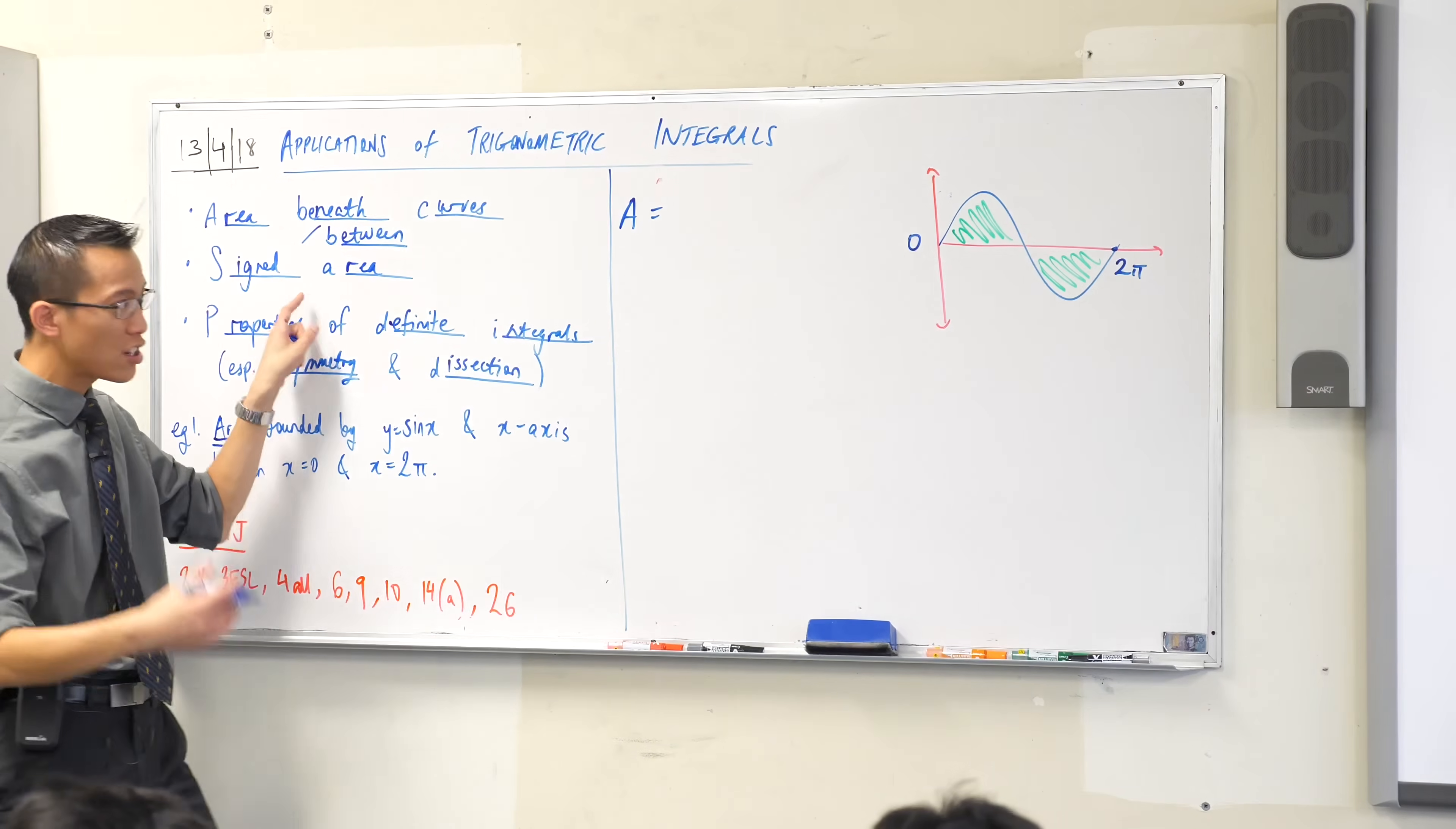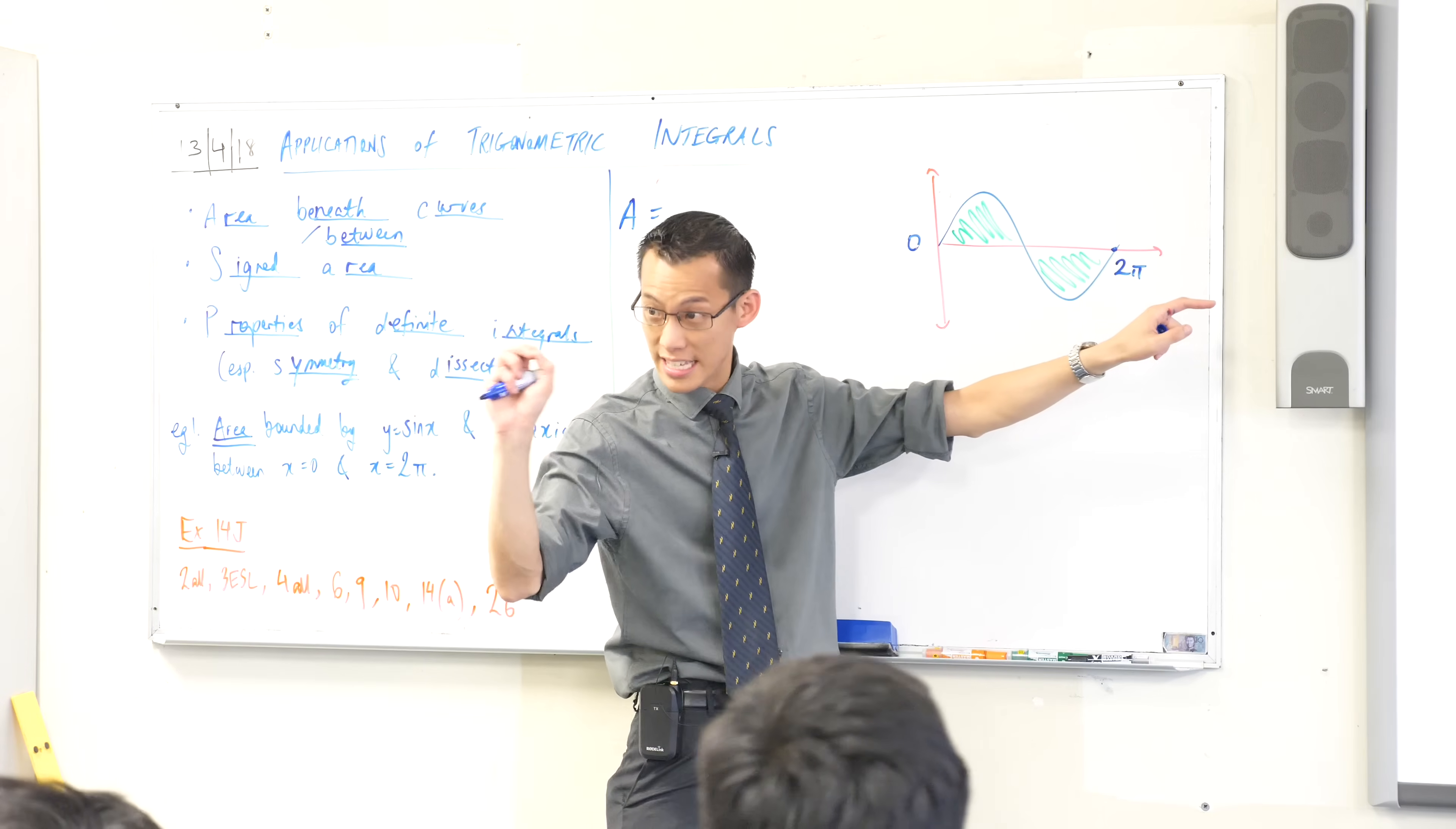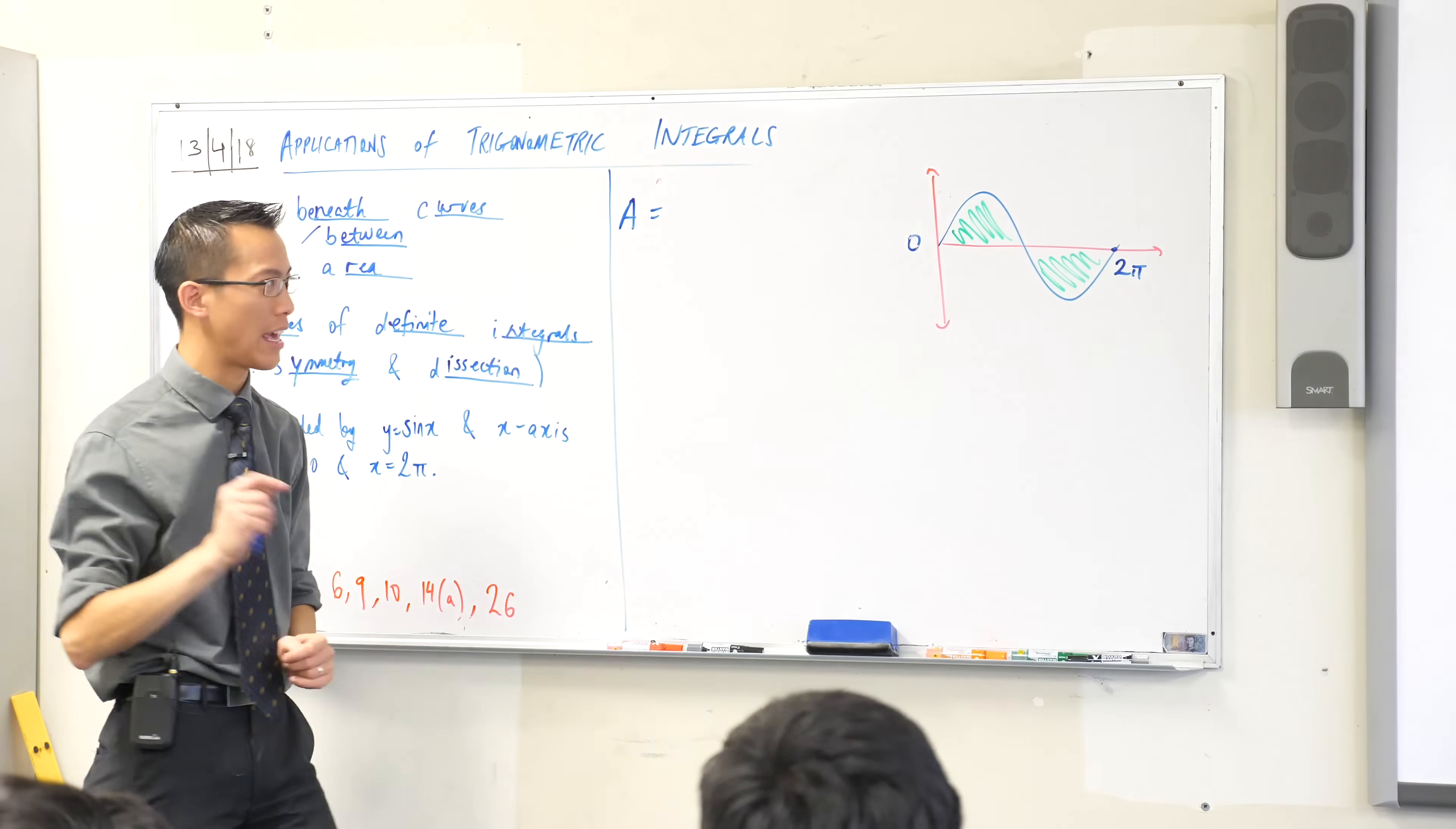That means I have to be careful because an integral just from 0 to 2π, you should be able to tell me with no calculation, if I integrated sine x from 0 to 2π, what would you get? You'd get zero, that would be the signed area. This camel hump and this anti-camel hump would just cancel each other out, okay? So I have to form my integral a little more carefully.